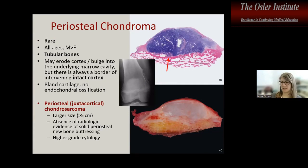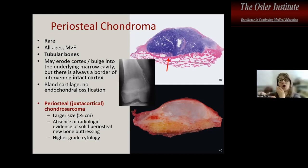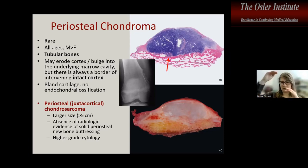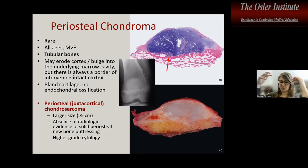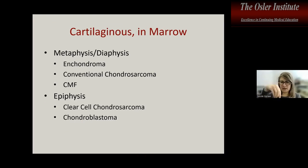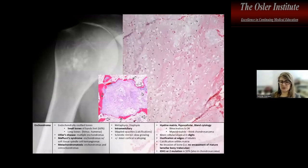Periosteal chondromas versus periosteal chondrosarcomas are distinguished by whether they invade the underlying marrow cavity. Chondromas may saucerize the cortex but do not infiltrate. For cartilaginous neoplasms — whether surface chondromas or enchondromas in the marrow — the key question is: do they percolate in an infiltrative manner and surround pre-existing lamellar bone? If they only push, they are benign.